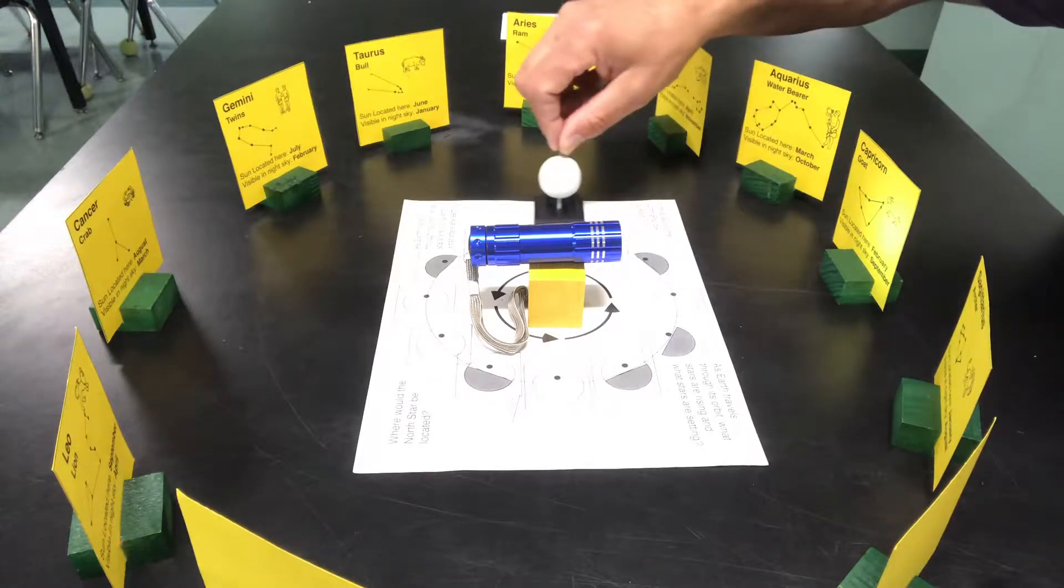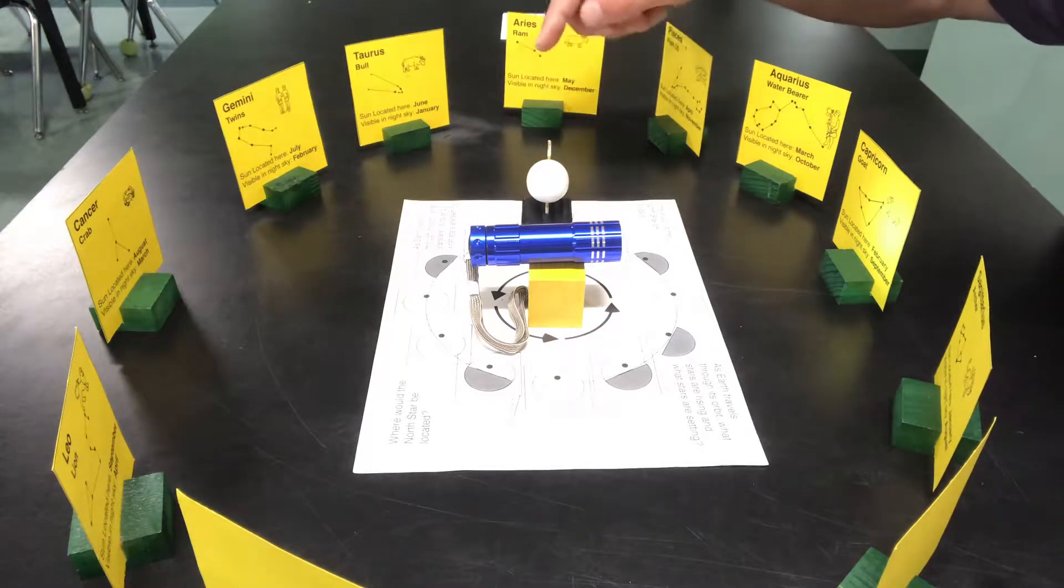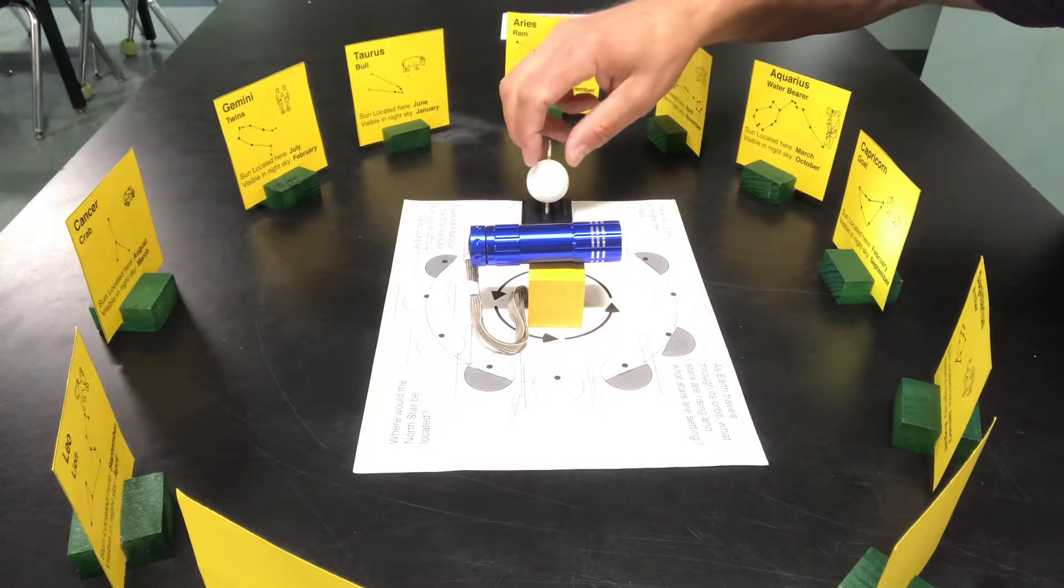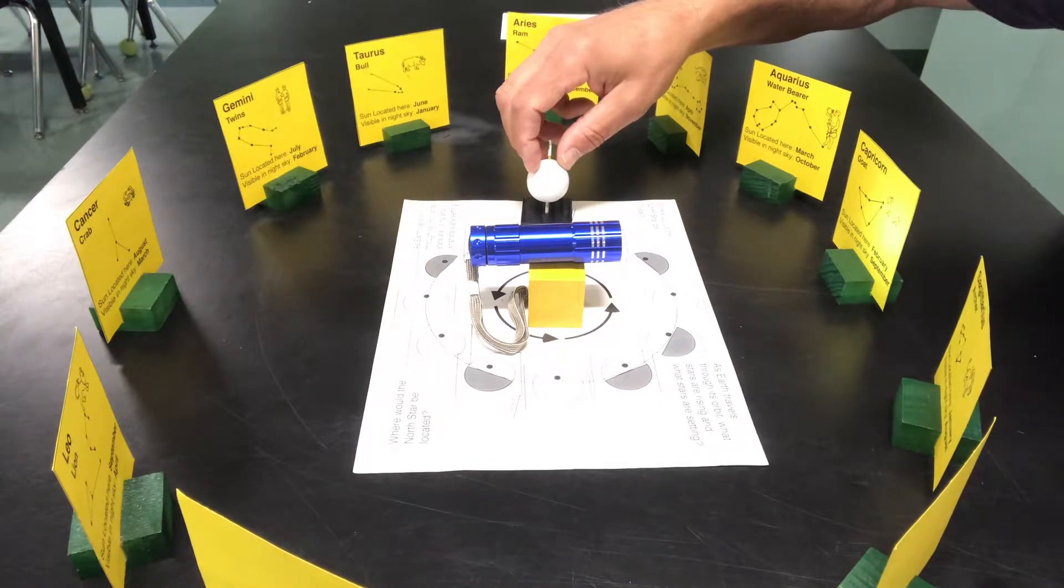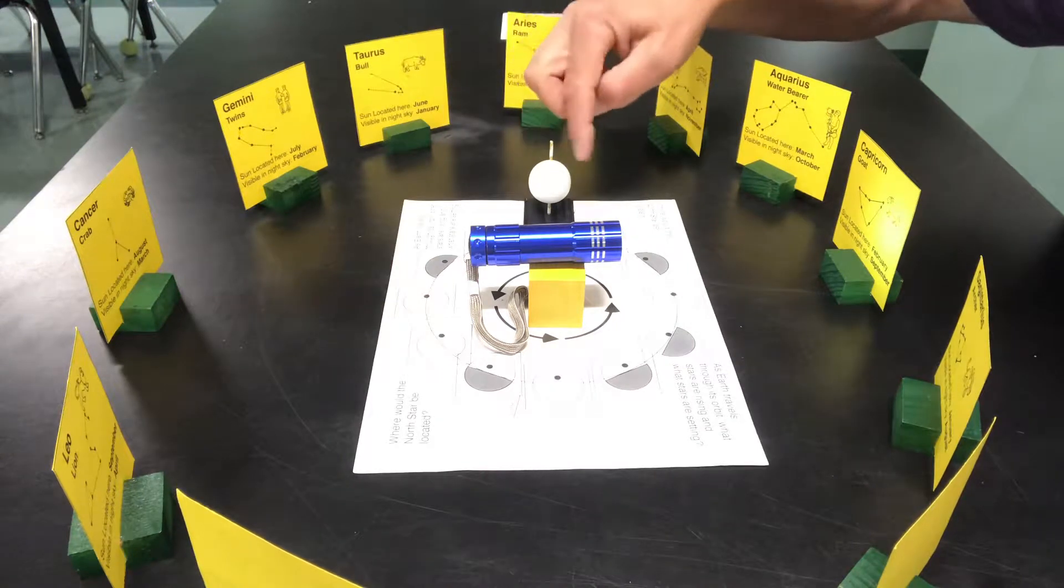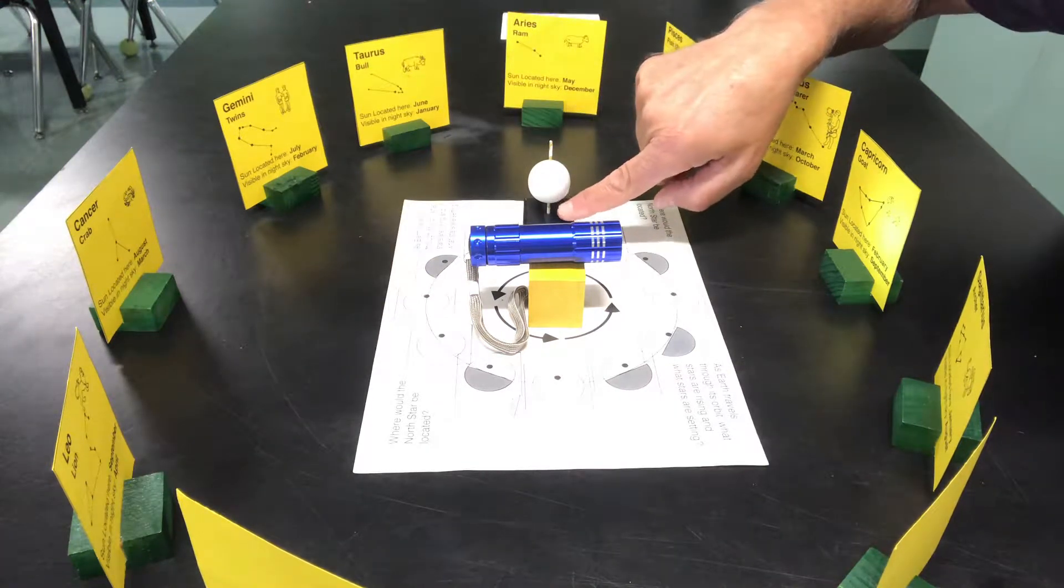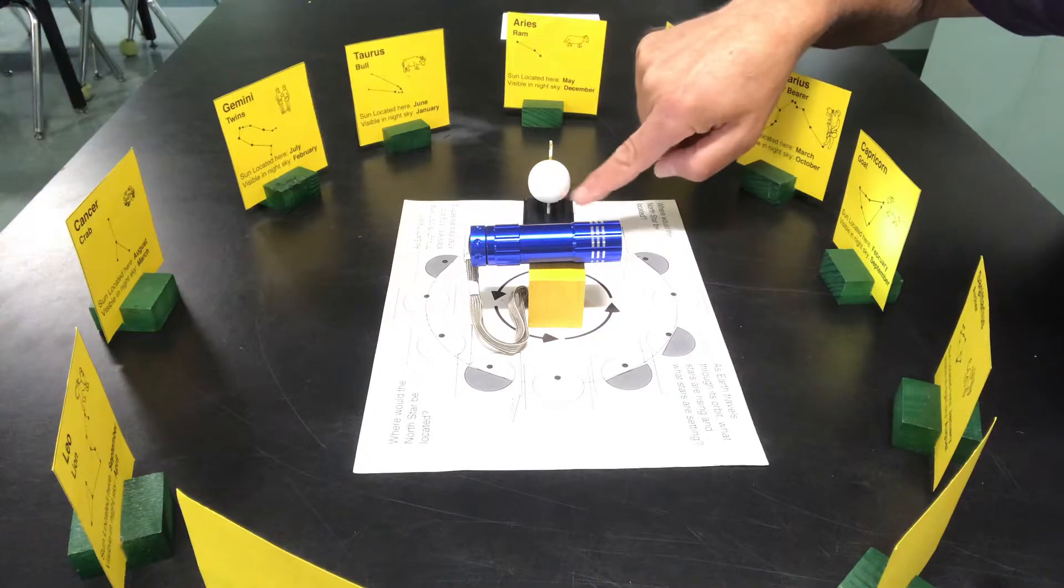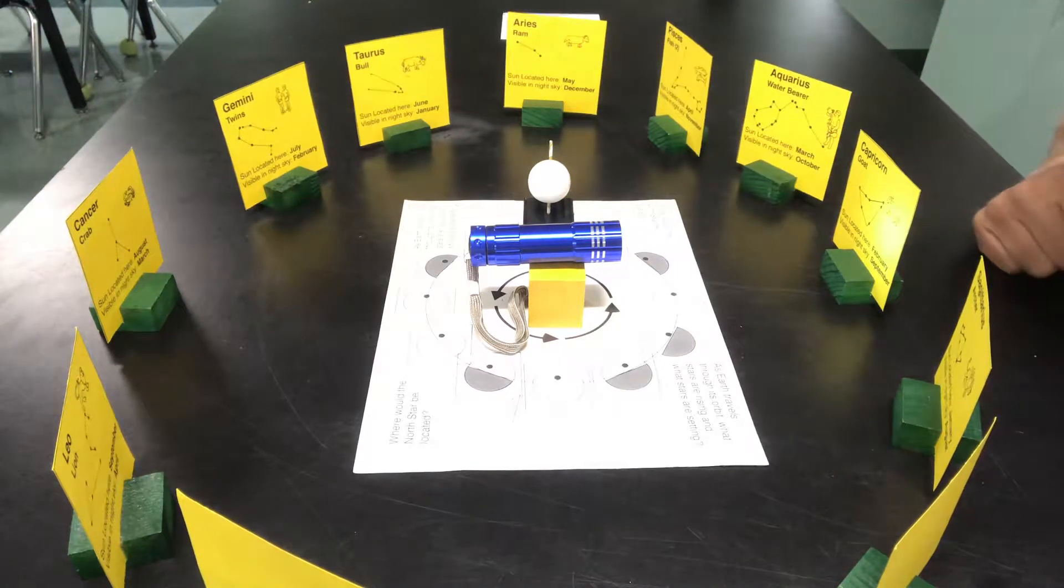And then as it moves away, now the North Pole is tilted away, so the Northern Hemisphere receives less light. More of the Northern Hemisphere is in shadow or behind that Terminator line in the darkness. And the South Pole is tilted towards the sun, so more of the Southern Hemisphere is receiving light.